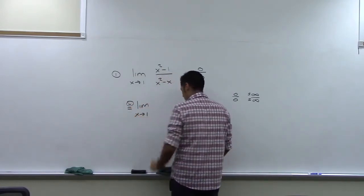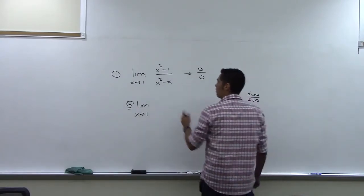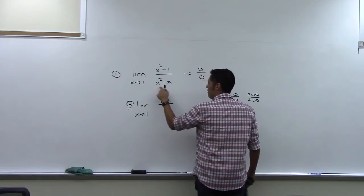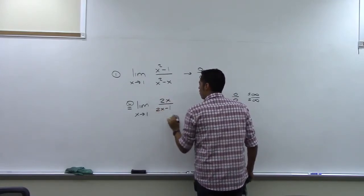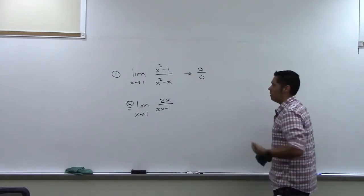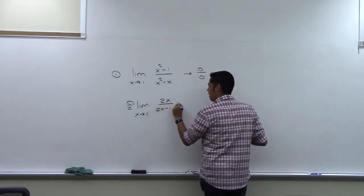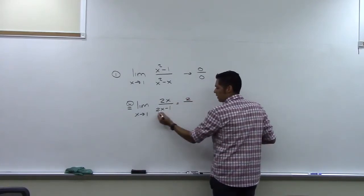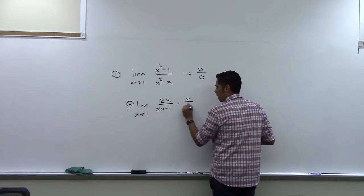By L'Hôpital's rule, the limit as x approaches one becomes the derivative of the top, which is 2x, divided by the derivative of the bottom, which is 2x minus one. Now we apply the limit again: letting x approach one, we get two on top, and on the bottom we get two minus one, which is one.